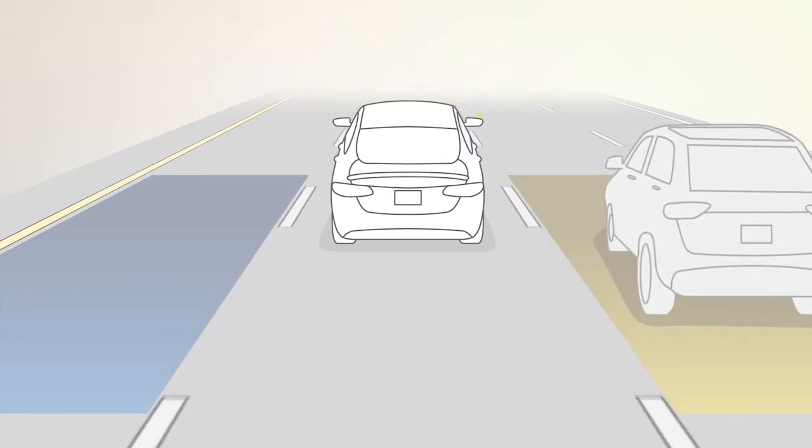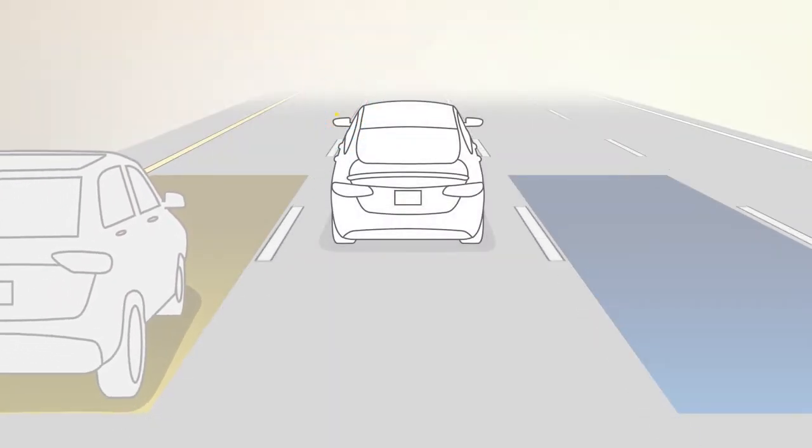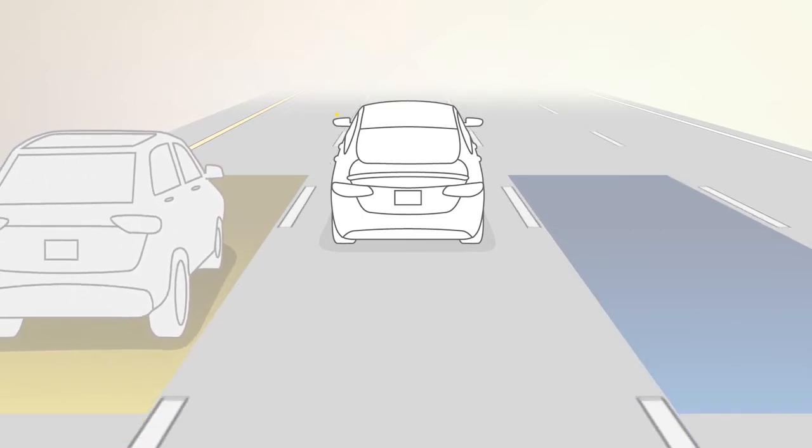If an object appears in the blind spot zone from either side of the vehicle, the BSM light will appear in the corresponding outside mirror. A warning will also be issued if a driver enters the detection zone from the rear or if the system senses another driver in the direction of your turn signal.